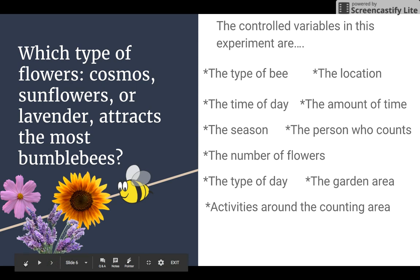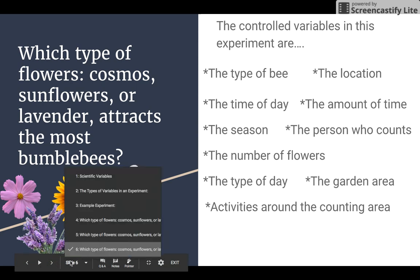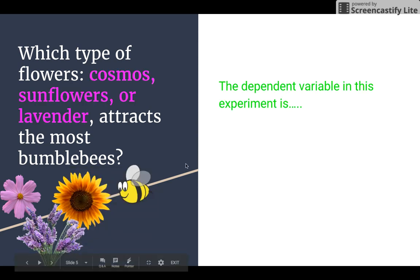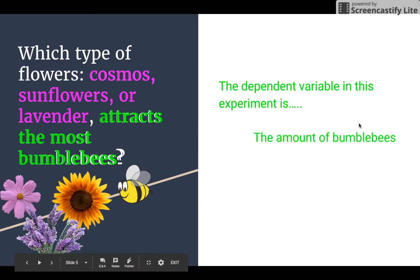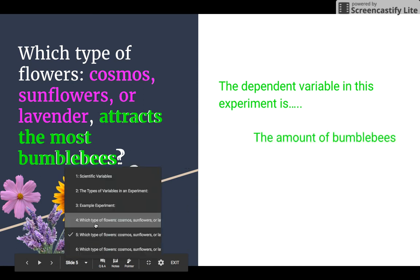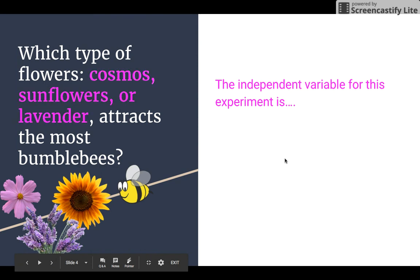If we go back and we look at the dependent variable for the experiment, well, that's just simply, again, the amount of bumblebees. If we go back and look at the independent variable, the thing we're changing, that's the type of flower.